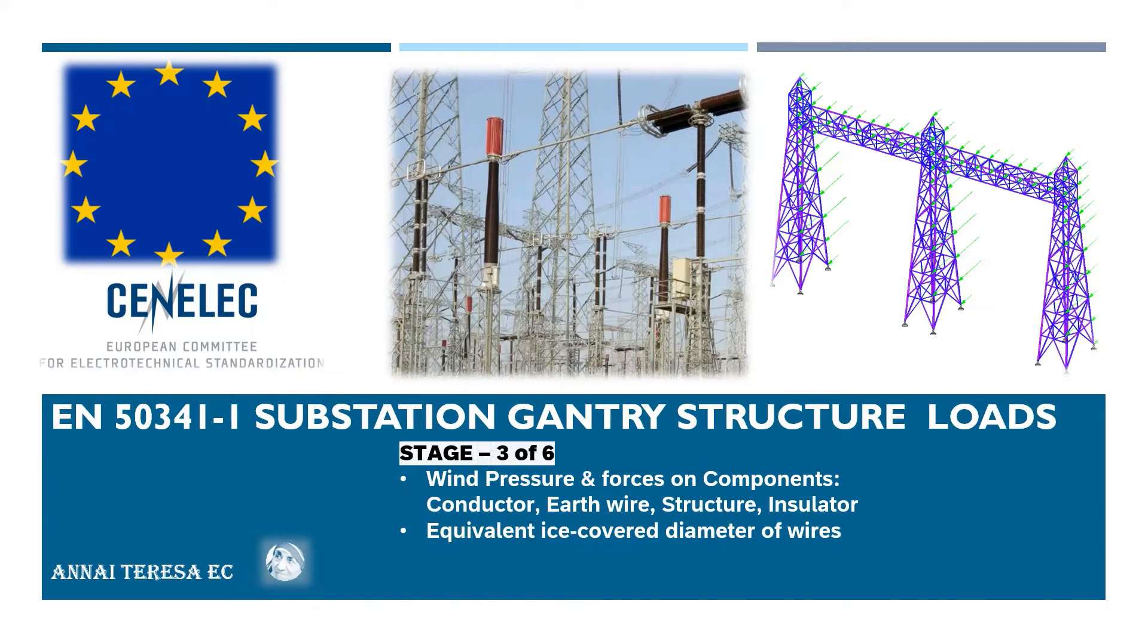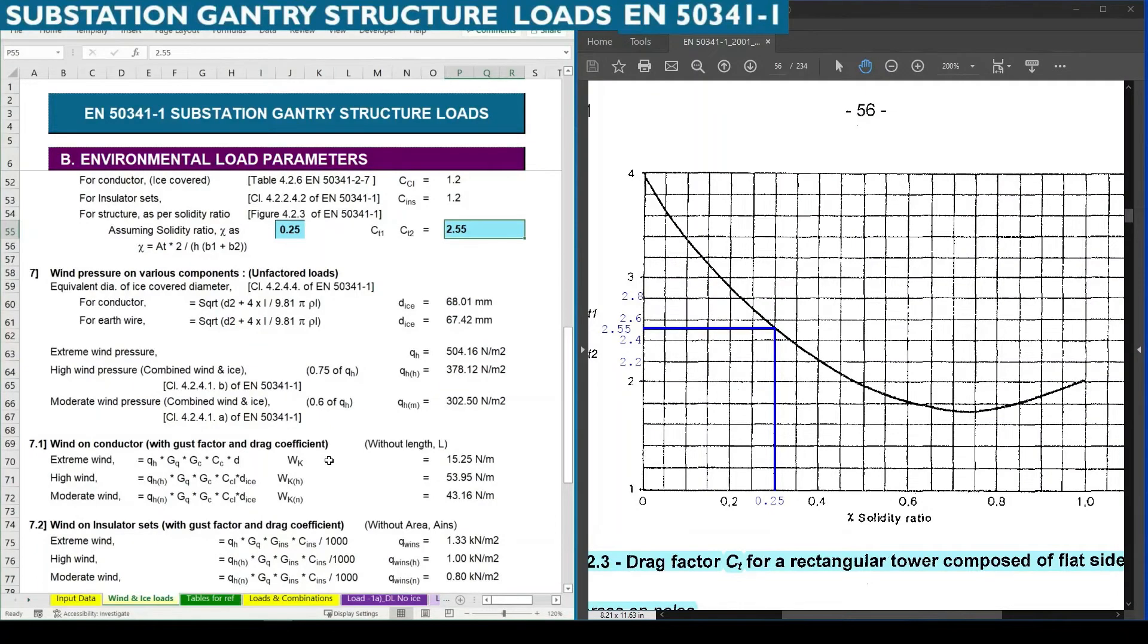In this Stage 3 we are going to discuss wind pressure and forces on components, various components of gantry structure such as conductor, earth wire structure, insulator, and equivalent ice covered diameter of wires. Next we need to calculate wind pressure on various components.